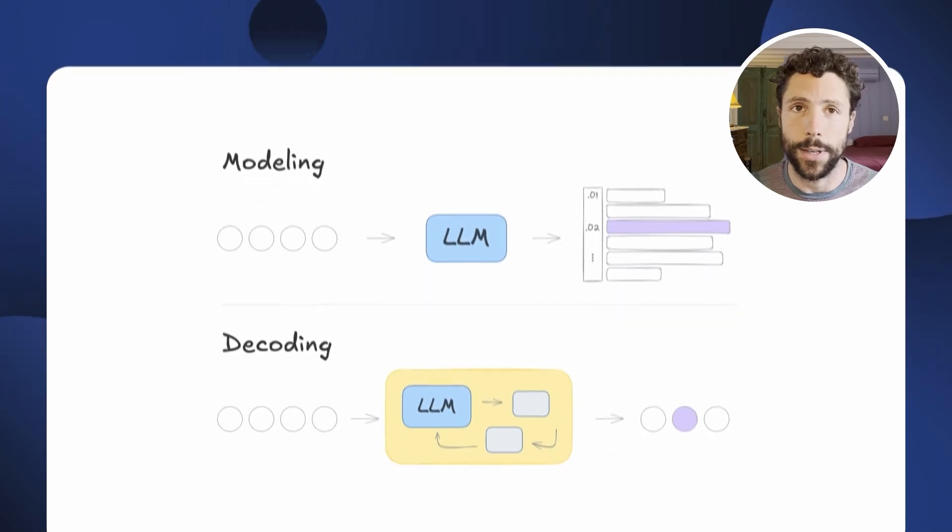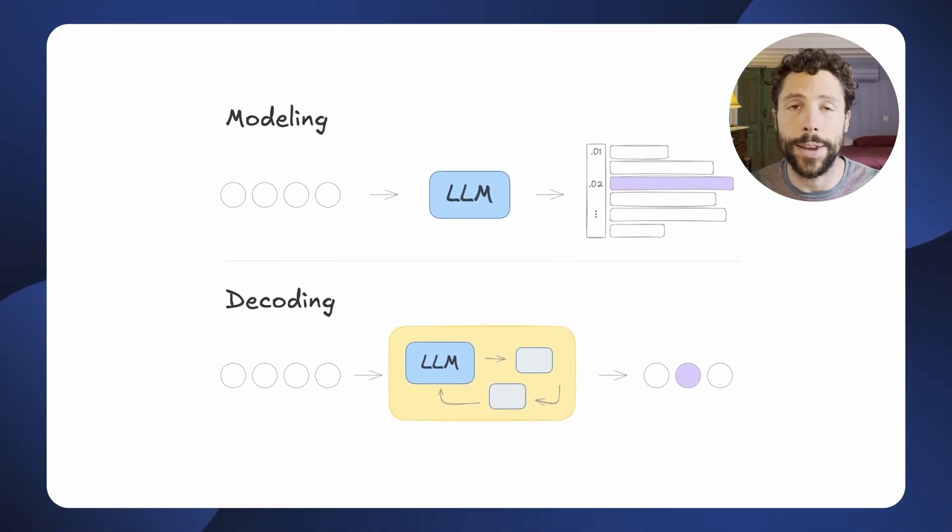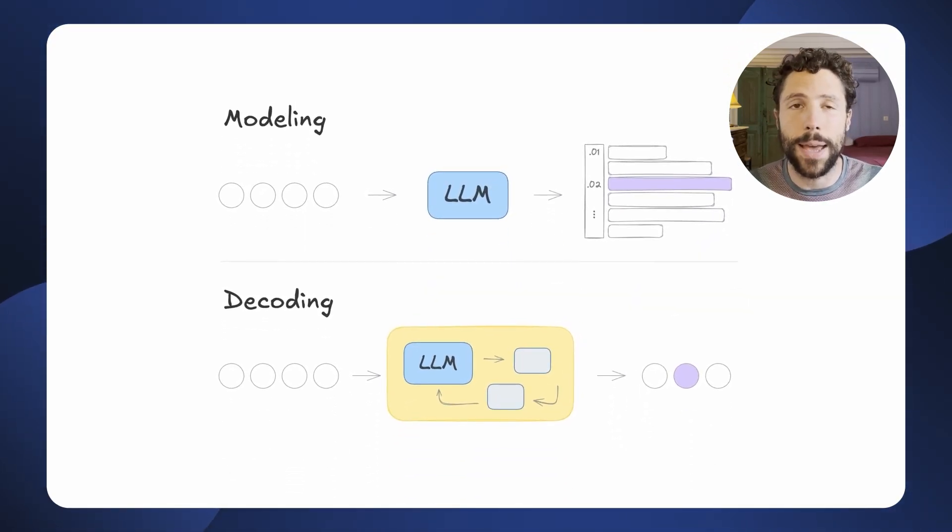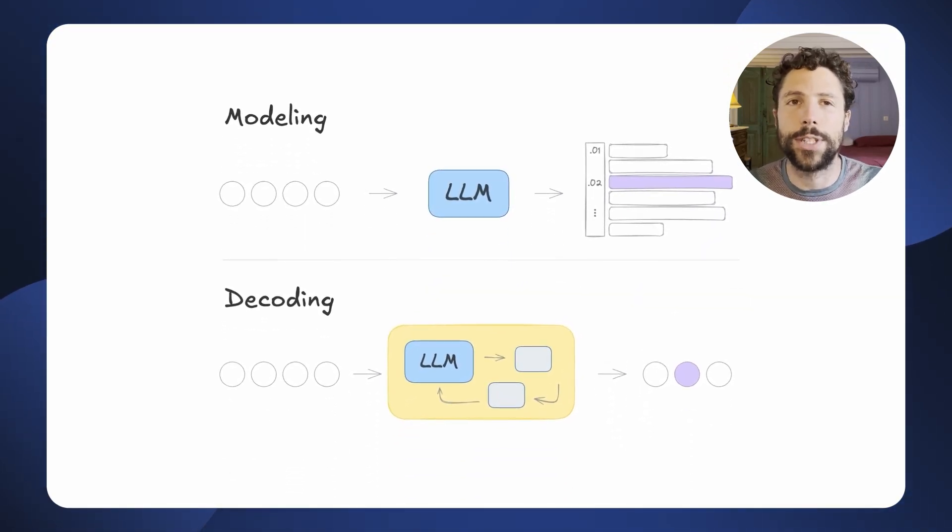Or even more abstractly, differentiating between drafting, planning, and developing phases. The specific method used to search this space is called a decoding strategy. And the choice of a particular decoding strategy can impact a model's quality along different dimensions — from task-specific performance, where different strategies may be more suitable for creative tasks versus more structured outputs, to inference speed, which determines the computational cost per generated word.